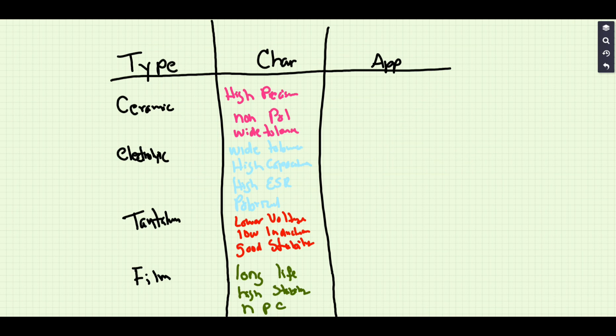All right, let's talk about some types of capacitors. We have ceramic type capacitors, and they are very high precision, they're non-polarized, and they have a very wide tolerance range. You're going to find them a lot in resonant circuits and also in DC motor circuits.